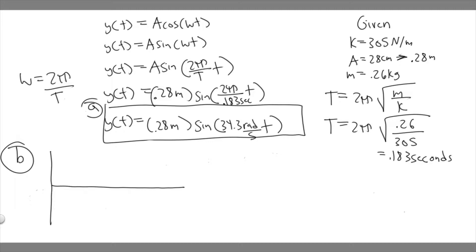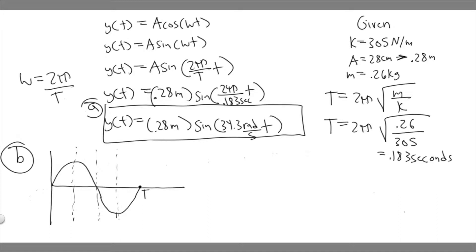Draw a sine wave — it goes through the origin, goes up, then down, then ends back at the start. That's one period T. Now, on a sine wave, each quarter of the period corresponds to a key point. So the distances between these key points are each one fourth of T. This point at one fourth T is the maximum, one half T is back at zero, three fourths T is the minimum, and T is back at the start. So the spring is longest at one fourth T and shortest at three fourths T.